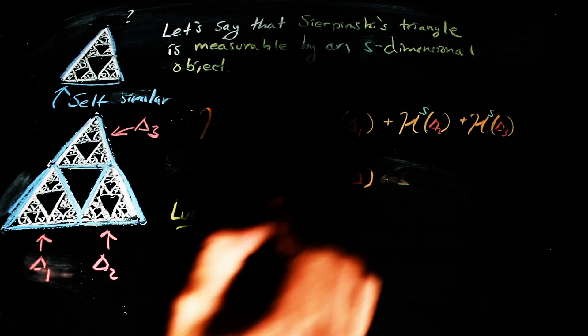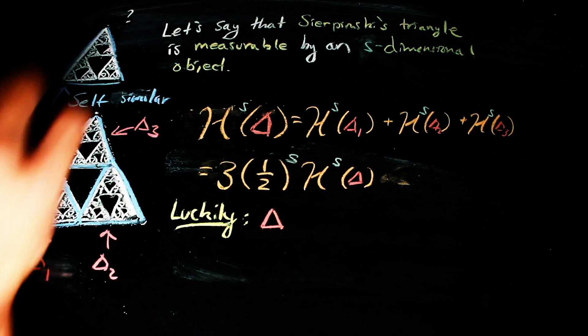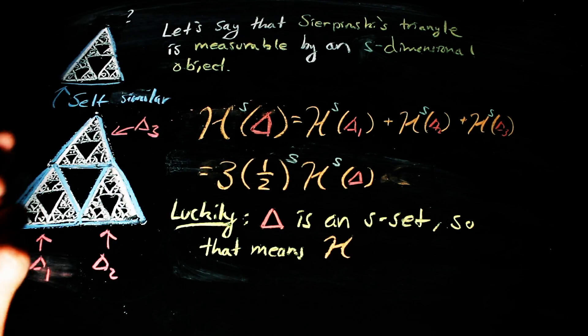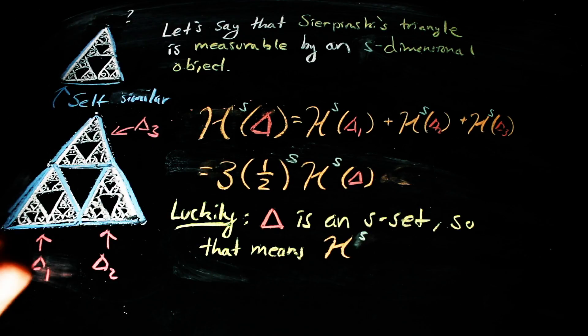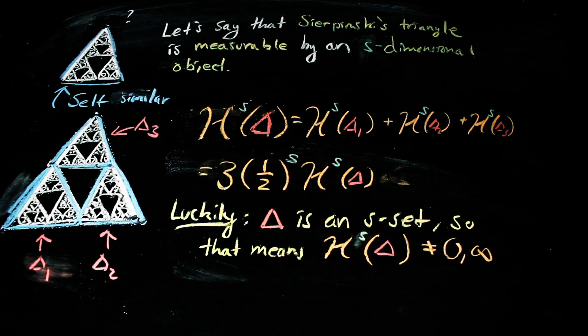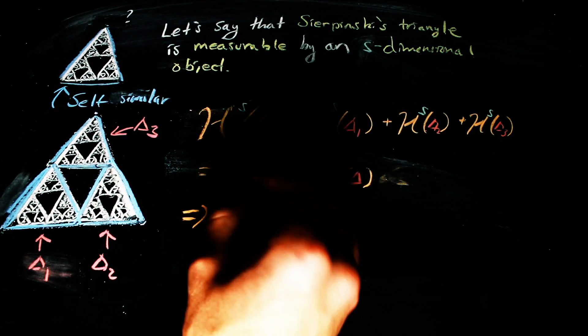However, we get really lucky. Although we won't prove it, Sierpinski's triangle is an S-set, which we talked about briefly before. It just means that at the jump point that we're worried about for this set, we don't get infinity or zero when we measure it.